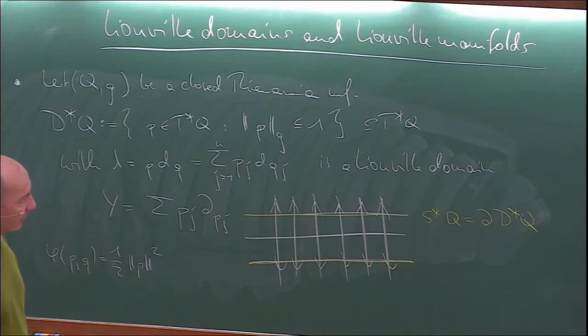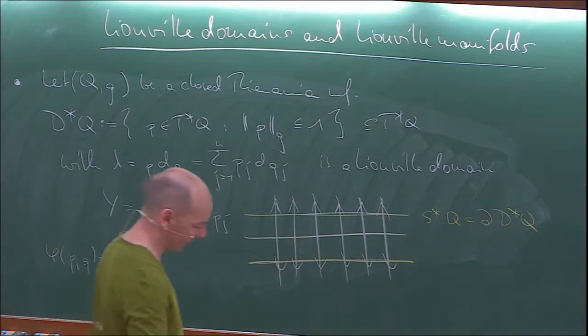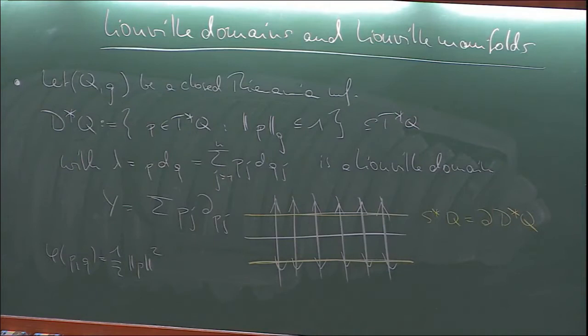The additional thing for Weinstein domains is that they have a more manageable topology than a general Liouville domain. We don't know very much about a general Liouville domain — they're not all that well understood — so Weinstein domains are the ones most studied. Here's another exercise: if (W, lambda, phi) is a Weinstein domain and phi is a Morse function, then the indices of the critical points of this Morse function are bounded above by half the dimension of W.